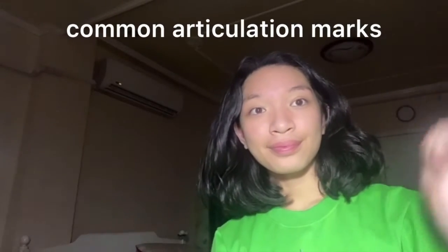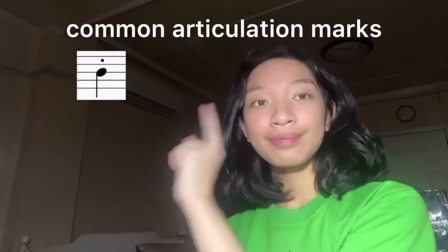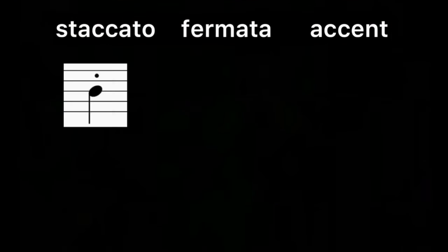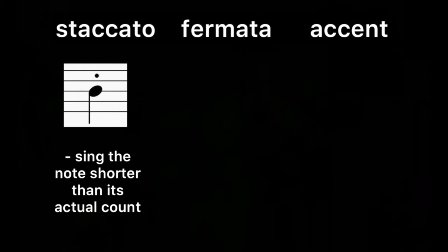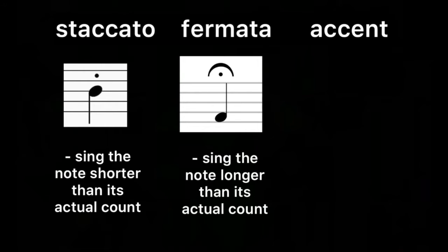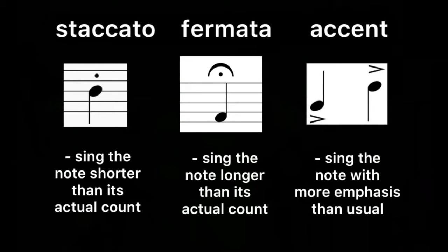The most common articulation marks would be the staccato, the fermata, and the accent. The staccato means that you should sing the note shorter than its actual count. The fermata means that you should sing the note longer than its actual count. Lastly, we have the accent, which means that you should sing the note with more emphasis than usual.